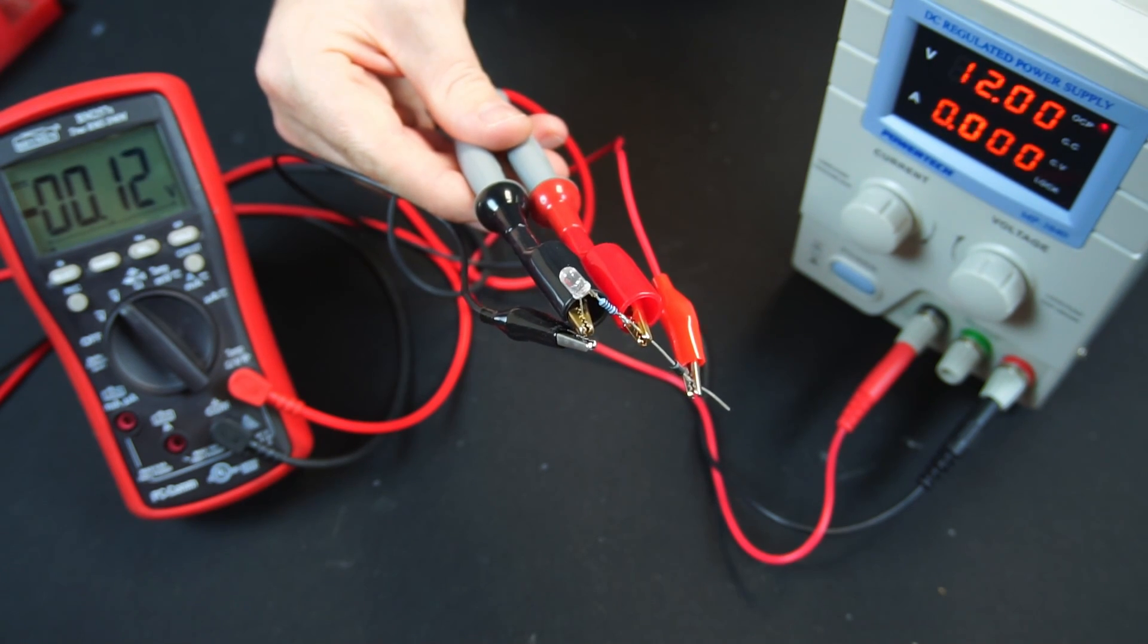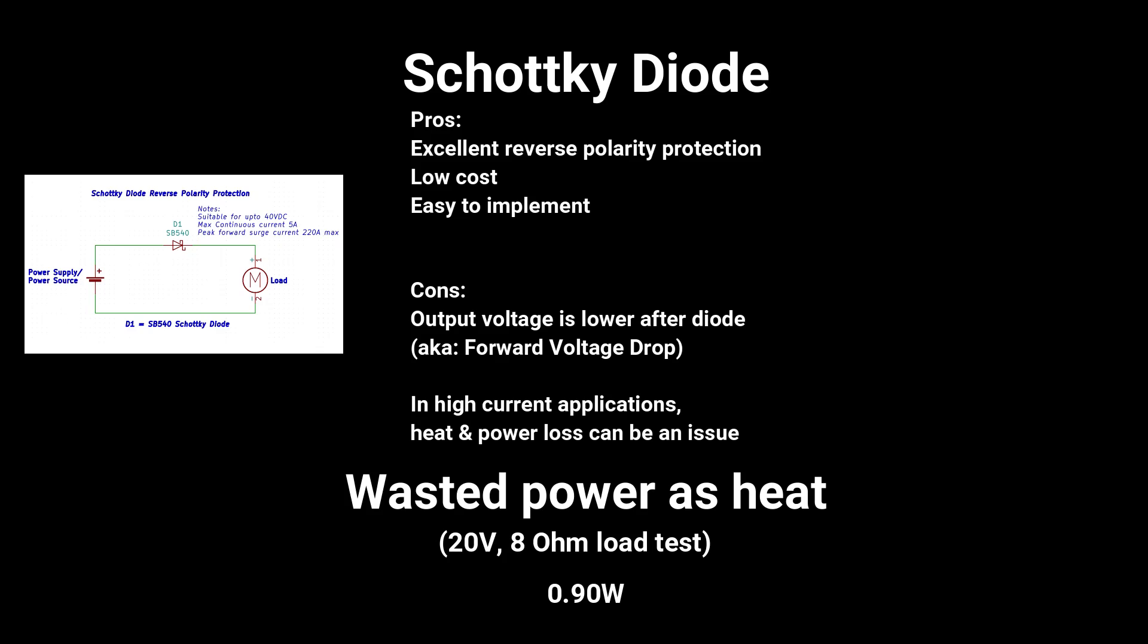Now when I flip the connections so the polarity is reversed the diode blocks the current and the meter shows zero. The advantages of using a Schottky diode are excellent reverse polarity protection, low cost and easy to implement. However it comes at a cost. Output voltage is lower after the diode aka forward voltage drop and in high current applications heat and power loss can be a big issue.